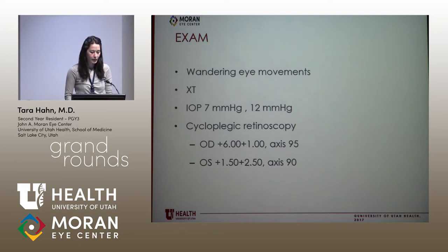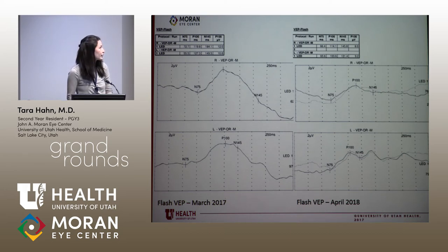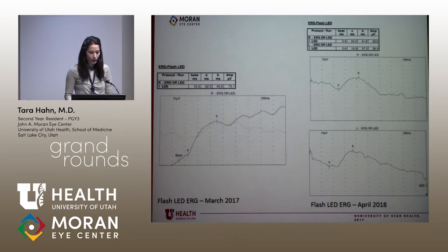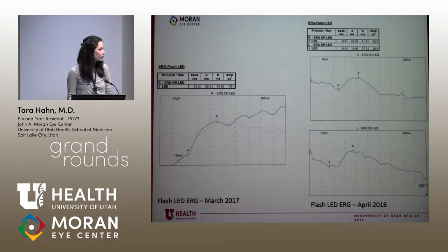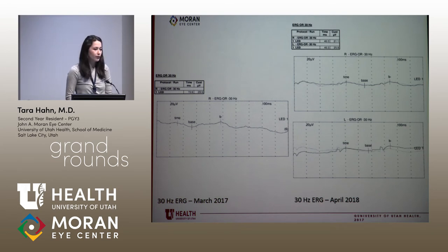In the clinic, he has wandering eye movements and exotropia. On EUA, his pressures were 7 and 12. This is his cycloplegic retinoscopy. In 2017 he had a VEP and ERG without an associated EUA, so we have a comparison point. His P100 amplitude was slightly better in 2017, but that wasn't under anesthesia, so it's probably comparable. On single flash ERG, he has decreased B-wave amplitude. On 30 Hz flicker testing the cones, he has a very poor cone response bilaterally, as he did back in 2017.